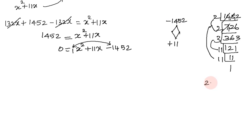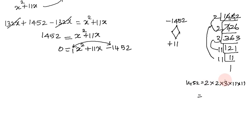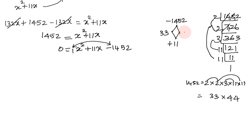Factoring 1452: 2 times 2 times 3 times 11 times 11 gives 1452. The two factors we need are 33 and 44, since 44 minus 33 equals 11, and 44 times 33 equals 1452.